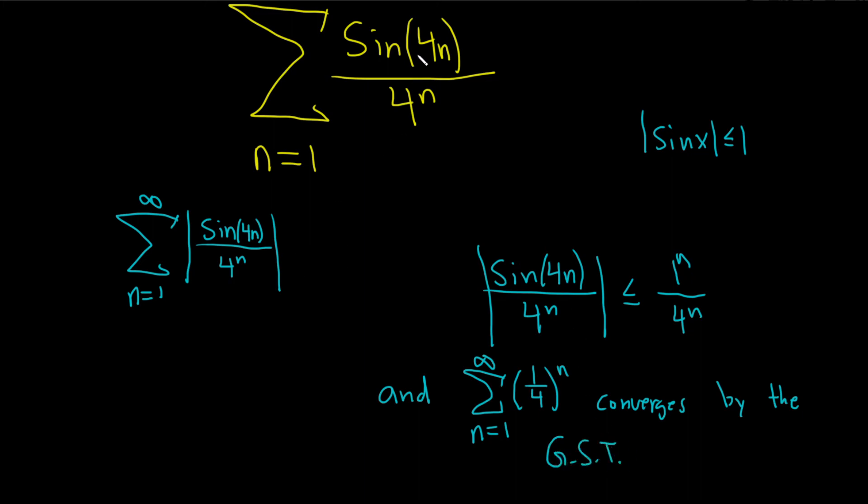So we took the absolute value of this because we're trying to show absolute convergence. We showed that this is less than or equal to, I guess, the terms of a convergent series. And this converges by the geometric series test since r is 1 fourth, which is less than 1.